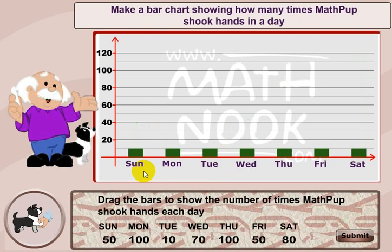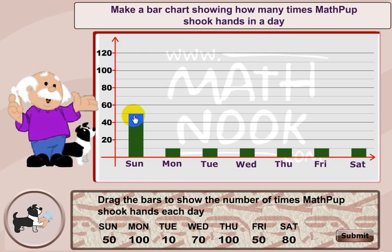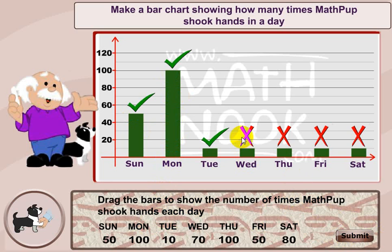The next section is a little more interactive because you actually have to draw the graph. It says, 'Make a bar chart showing how many times MathPup shook hands in a day.' Drag the bars to show the number of times MathPup shook hands each day. On Sunday, he did it 50 times — I'm clicking, dragging, and dropping there at 50. Monday is 100. I'll go ahead and check my answers. Tuesday is at 10, so I got that one right kind of as a bonus. But Wednesday, Thursday, Friday, and Saturday are wrong because I haven't put those in.